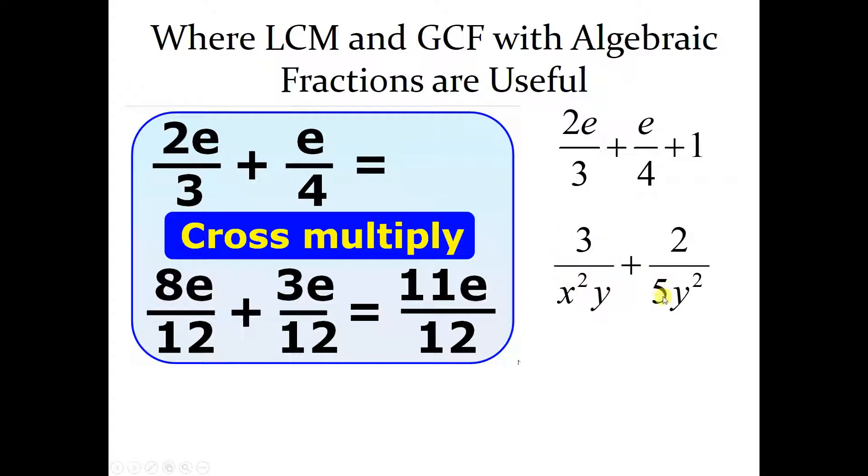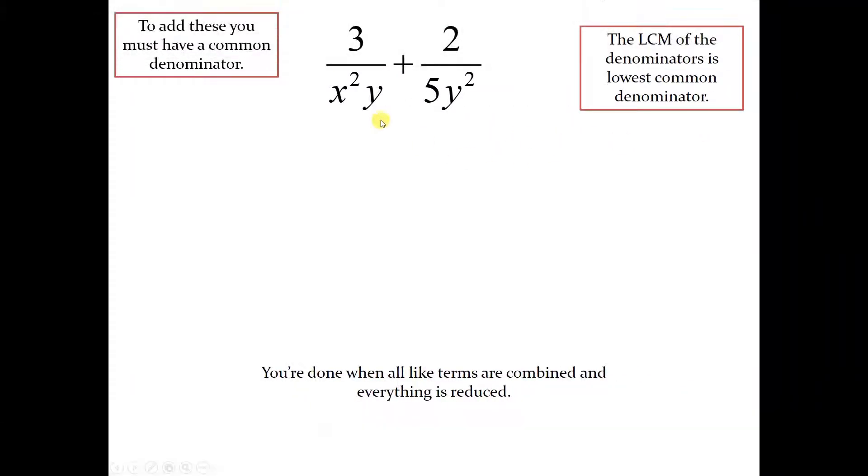So we're going to use that idea to find a common denominator between x squared y and 5y squared. What we need to do in order to find that common denominator is we need to find the lowest common multiple of those two expressions.